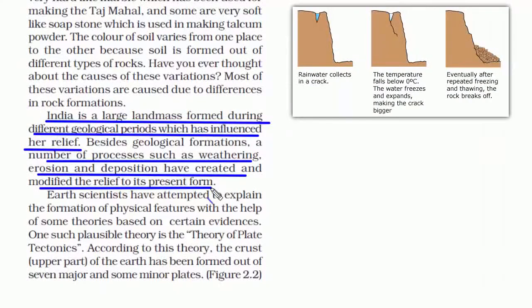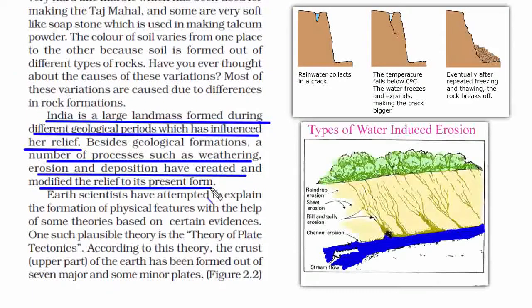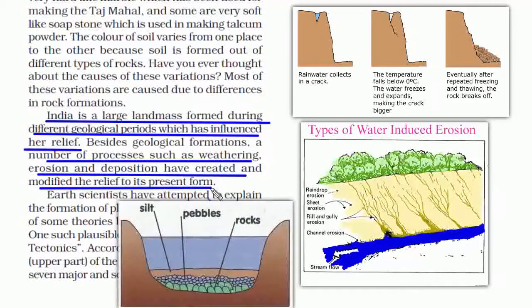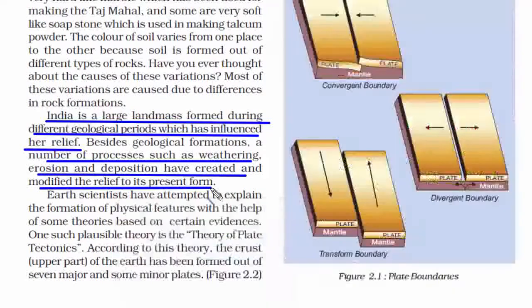By weathering we mean change of texture or appearance of soil or rocks over a long period of time, which can be due to running water, wind activity, glaciers, etc. Erosion means the process by which the surface of the earth is worn away or displaced by the action of water, glaciers, winds, and waves. Deposition is the end activity of erosion — when things move from one place and stop at another, leading to formation of new landmass, crust, plateaus, rocks, and deltas.